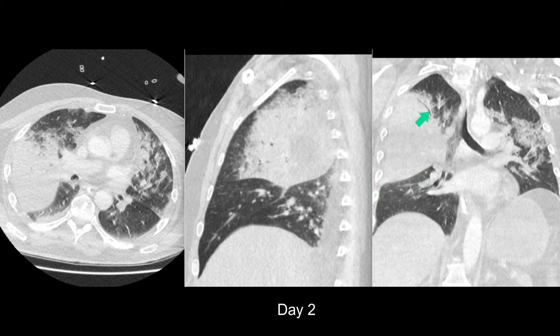Here is the small air bronchogram, and this confirms consolidation in the left mid-zone. The more posterior coronal slices also demonstrate consolidation and atelectasis in the left lower lobe. Also note the mucus in the right main bronchus and trachea. The diagnosis in this patient was Legionella pneumonia.